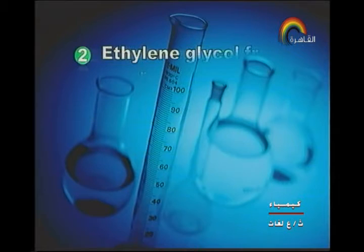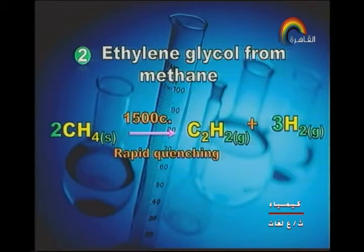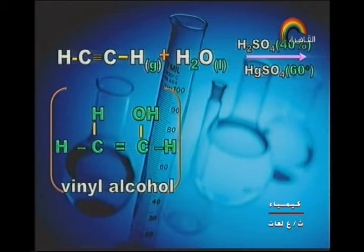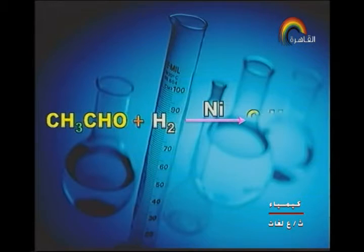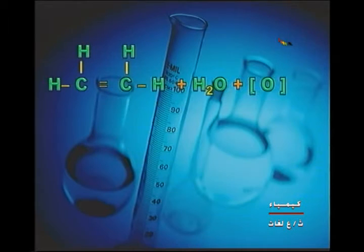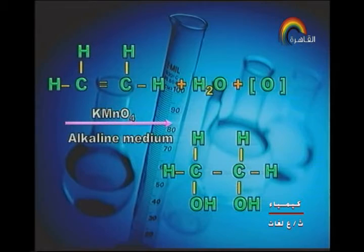Next point: acetylene glycol from methane. Two moles of methane heated to 1500°C with rapid quenching gives acetylene and hydrogen gas. Then acetylene undergoes catalytic hydration giving vinyl alcohol, an unstable compound that rearranges into acetaldehyde. Acetaldehyde is reduced to ethanol, then ethanol with concentrated sulfuric acid at 180°C gives ethylene and water. Ethylene on bio-reaction with dilute alkaline potassium permanganate gives acetylene glycol, or 1,2-dihydroxyethane.